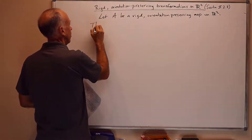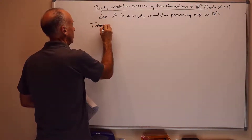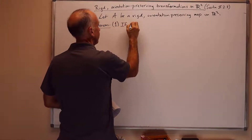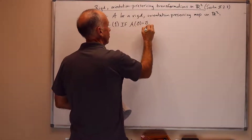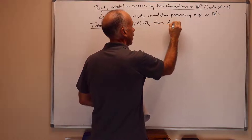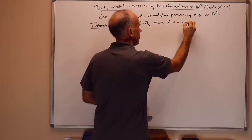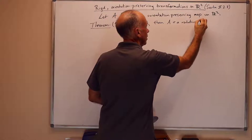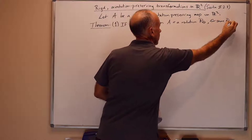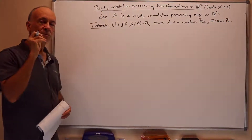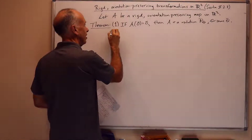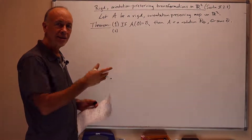The theorem we're going to prove is the following. It's really the third part that's maybe the most important. Part one is: if A of 0 is 0, so if A holds the origin fixed, then A is a rotation R theta for some theta. So the only rigid orientation-preserving maps that hold the origin fixed are rotations, and it's pretty clear that rotations are rigid and orientation-preserving because they just rigidly rotate.